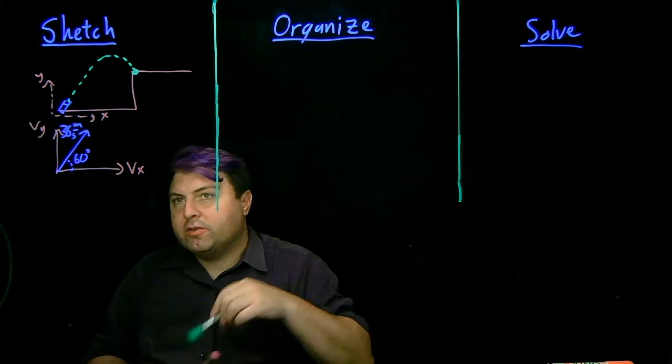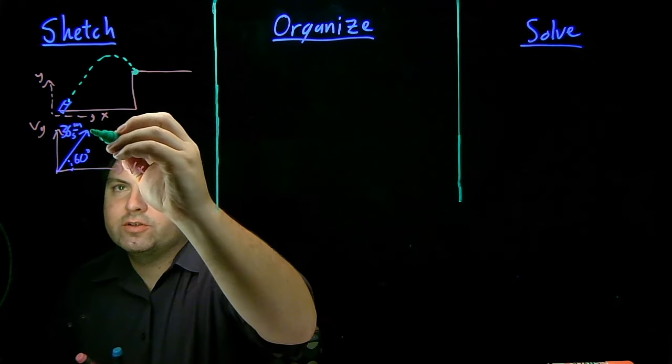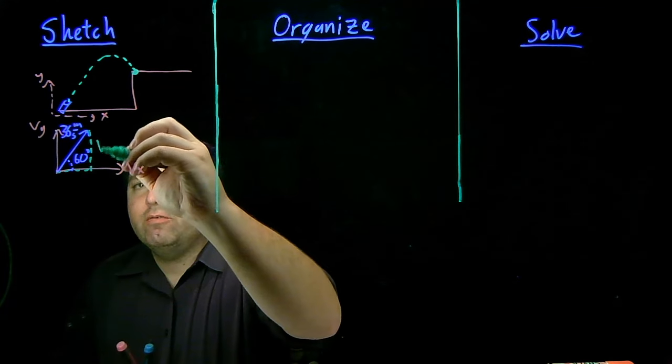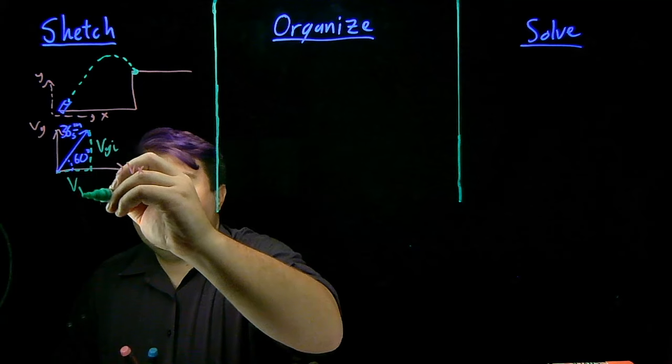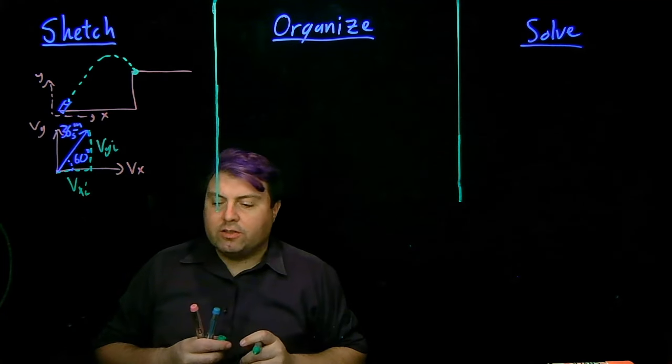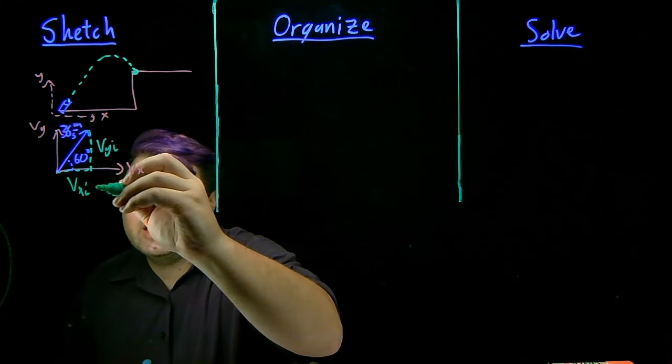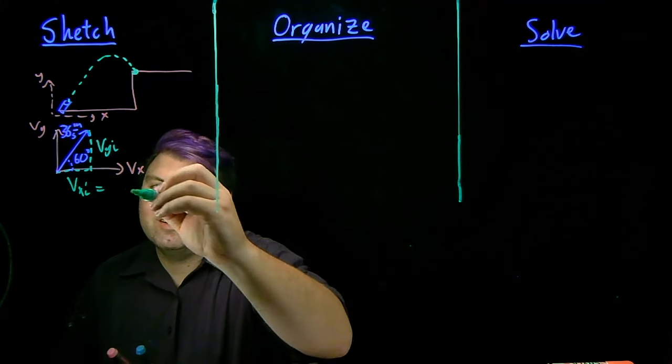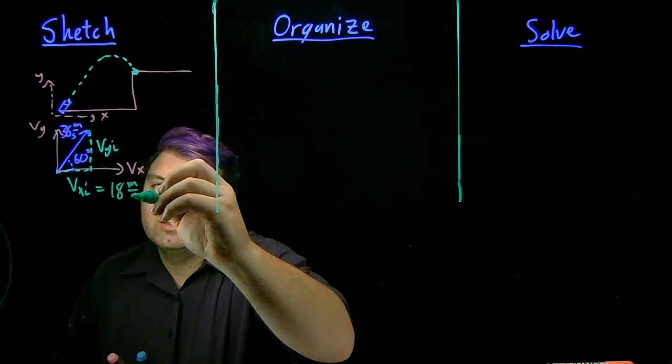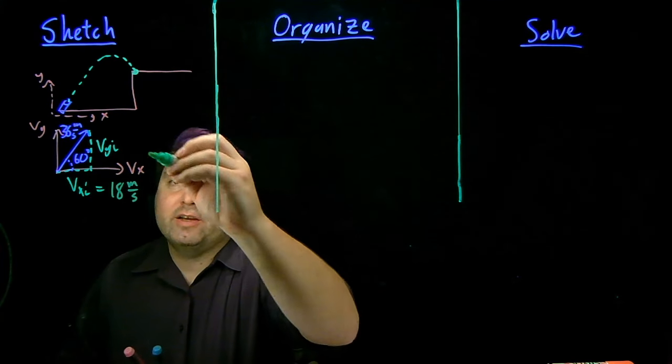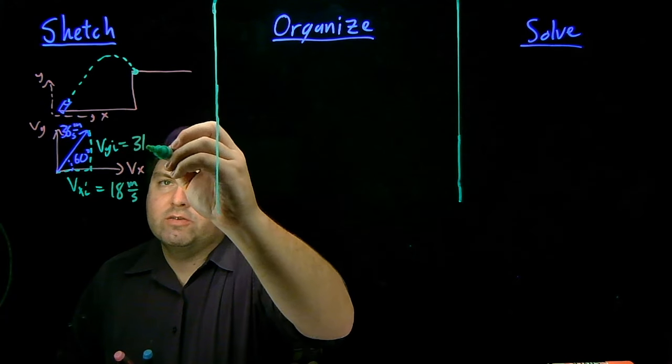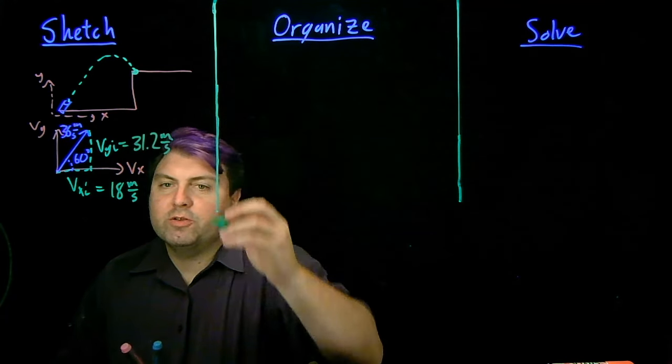So what we can do is we can decompose our vy and vxi into two different directions. So our vxi is going to be 36 cosine of 60 degrees which is 18 meters per second and our vy is going to be 36 sine of 60 degrees which is 31.2 meters per second.